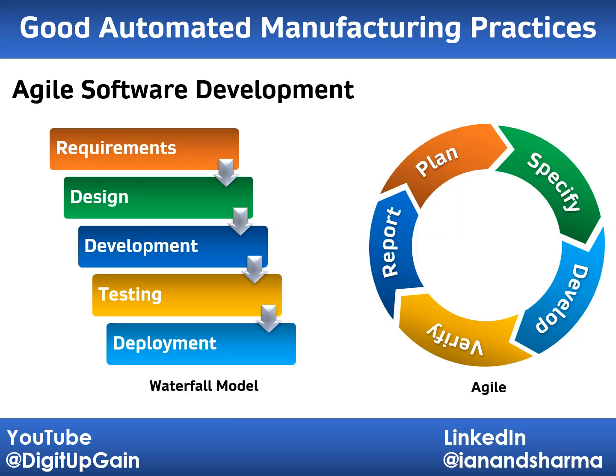Agile Software Development: The first version of GAMP 5 focused on a step-by-step linear approach to develop computerized systems. But today, many systems are built using faster, iterative, or agile methods. GAMP 5 2nd edition includes a new appendix to address these modern approaches, while still keeping the traditional waterfall model for situations like using off-the-shelf software. This update makes it easier to apply GAMP principles to both agile and traditional development methods, depending upon the project needs.